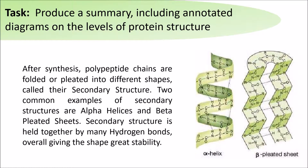After synthesis, polypeptide chains are folded or pleated into different shapes called secondary structures. Two common examples of these structures are alpha helixes and beta-pleated sheets. Secondary structure is held together by many hydrogen bonds, overall giving the shape great stability.